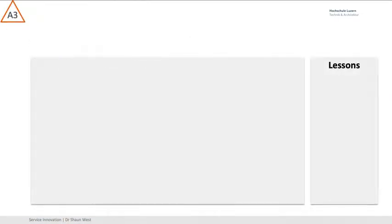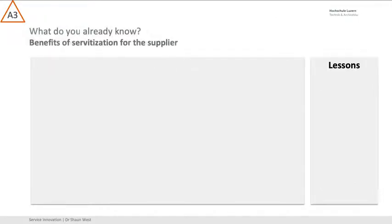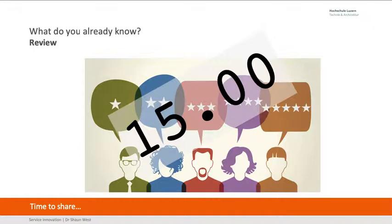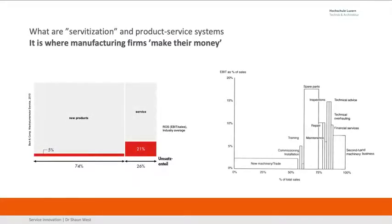I'm always going to ask you what you already know. This is all about why companies want to shift into services and what the benefits of servitization are for a Swiss firm. Why do we do services? We need to do services because the margins on new products are relatively low — in new machinery trade we're looking at less than 5% margins. That's really not very good.